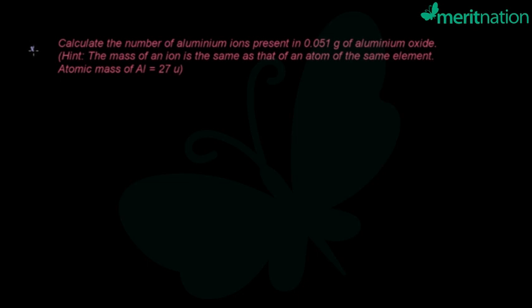The question is: calculate the number of aluminum ions present in 0.051 grams of aluminum oxide. The hint is given that the mass of an ion is the same as that of an atom of the same element. The atomic mass is also given for aluminum, that is 27u. Now what is asked is the number of ions of aluminum.